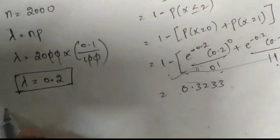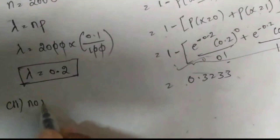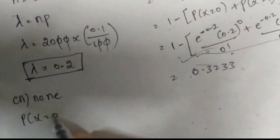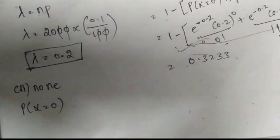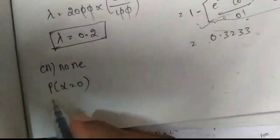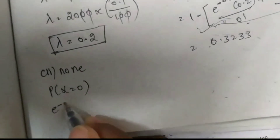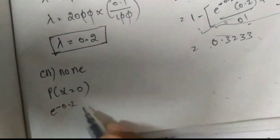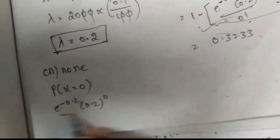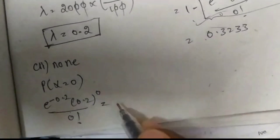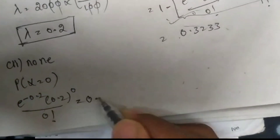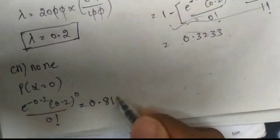Next, we find the probability that none suffer, that is P(X = 0). Substituting in the formula: e^(−0.2) × (0.2)^0 / 0! We get the answer 0.8187.